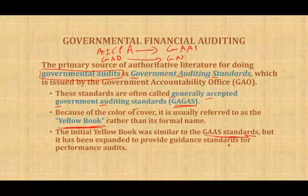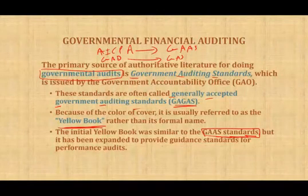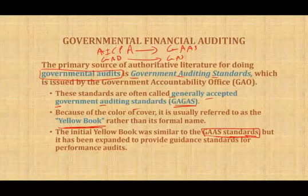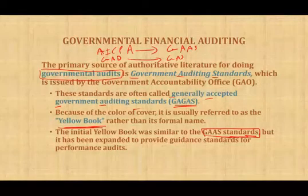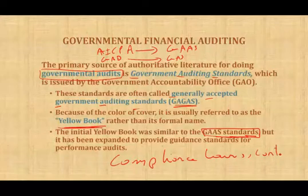The Yellow Book has been expanded to provide guidance and standards for performance audits. Everything you learn under Generally Accepted Auditing Standards, you don't throw out the window when you do a government audit — you still use the same rules, plus you have to do some compliance. The government is different from a private business. The auditor is more concerned with compliance with regulations, contract provisions, and grant provisions, in addition to the regular audit.